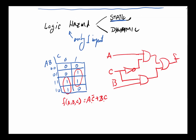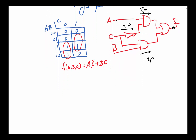The issue that causes logic hazards has to do with the fact that each gate has a certain amount of propagation delay. If I measure the output with respect to a, the signal only goes through two gates. If I measure it with respect to c, it actually goes through three gates. That difference in the number of gates — and therefore different levels of propagation delay — is the cause of logic hazards.